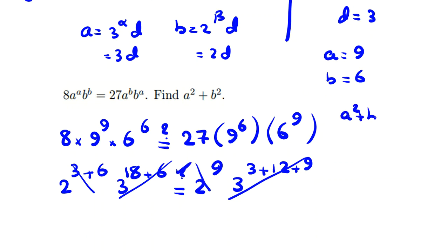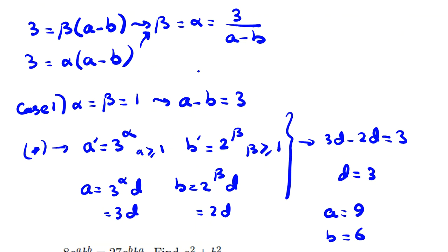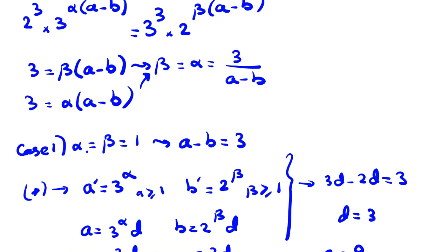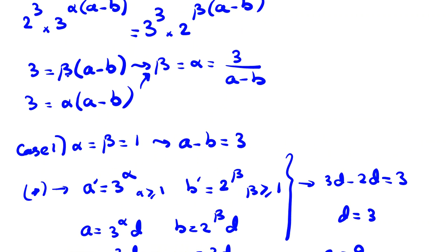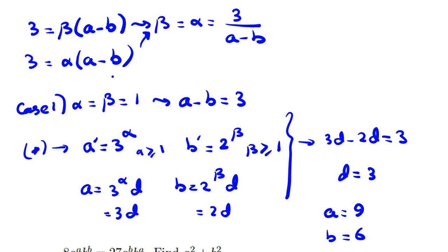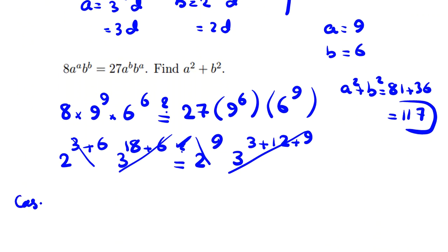So in this case, a squared plus b squared equals 81 plus 36 equals 117. To prove the solution is complete, we must also check Case 2: α equals β equals 3 and a−b equals 1.